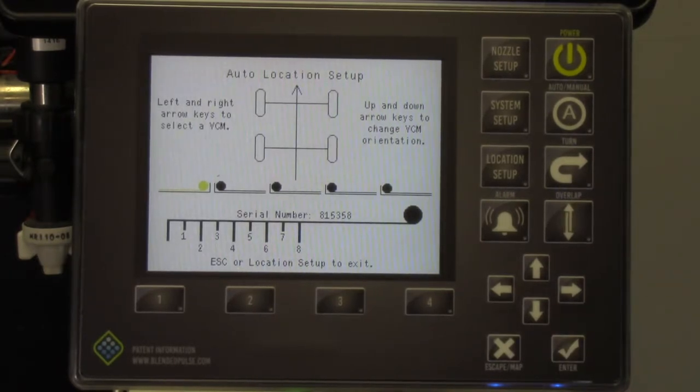Now you are at the VCM orientation and placement screen. This is where your information collection will come into play. Notice you have what looks like a boom and the VCMs are represented by a dot with a line. This screen needs to look exactly like the boom on the machine. If you need to go back and look to confirm, now would be a good time.